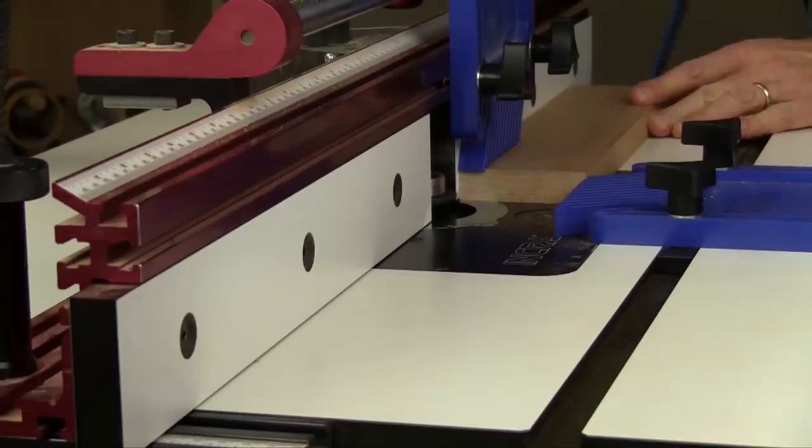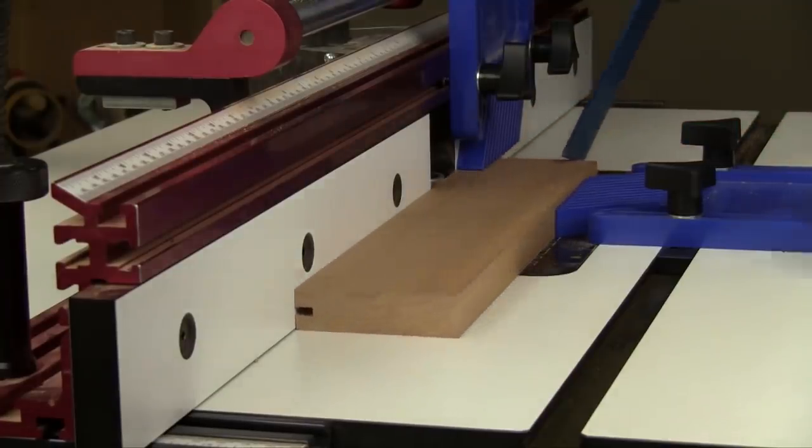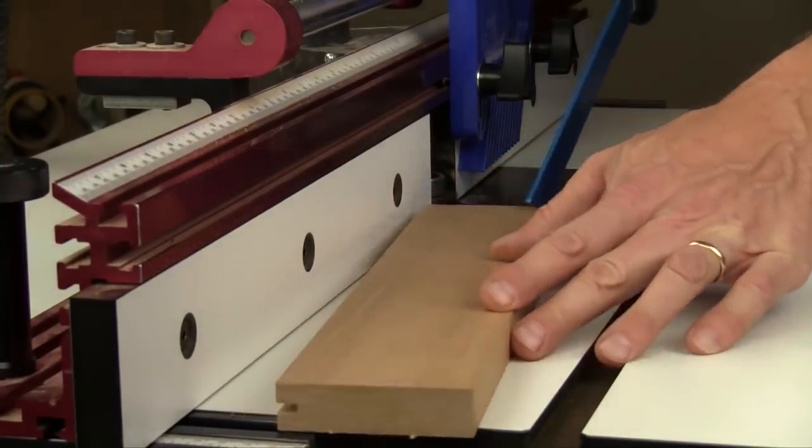Then cut the groove. It's a good idea to mount a feather board to both your router table and to the fence so work pieces are kept snug to the table and to the fence during the cuts.